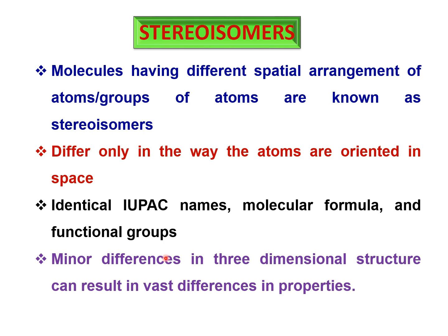These are minor differences in the three-dimensional structure of a molecule, but they are enough to differentiate the isomers in terms of their physical or even chemical properties. This is how we define stereoisomers and how they differ from each other in terms of stereochemistry. That's all for today — we'll discuss more topics in the next lecture. Thank you very much.